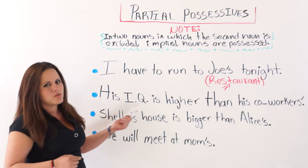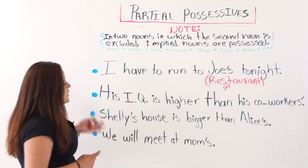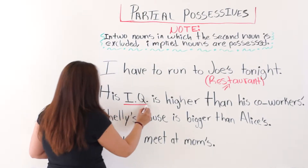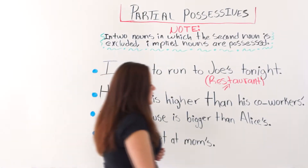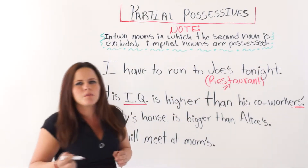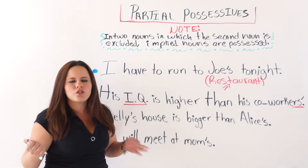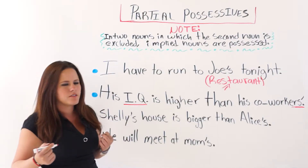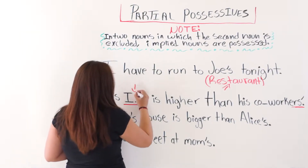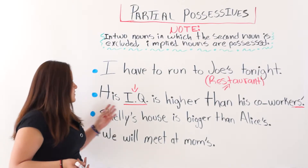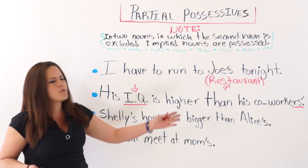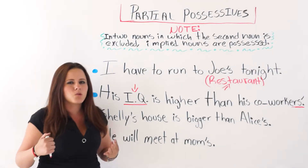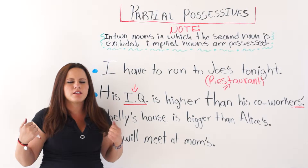His IQ — intelligence coefficient, for those of you who don't know — his IQ is higher than his co-workers'. We are talking about intelligence coefficient, and we are using a partial possessive. Which noun do you think is implied? Which noun do you think is being possessed? IQ, right? His IQ is higher than his co-workers' IQ. This is a partial possessive form, and we use this all the time in spoken English.